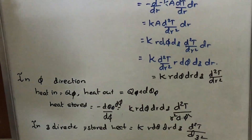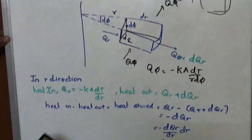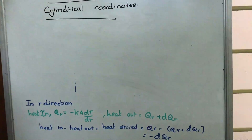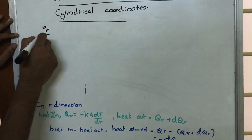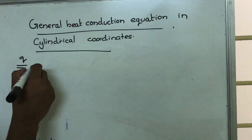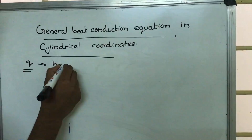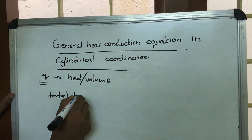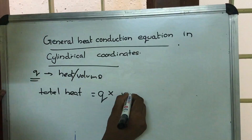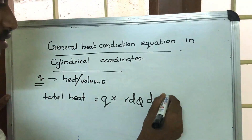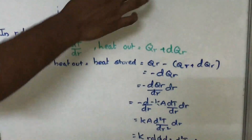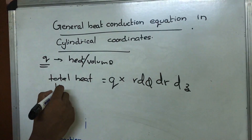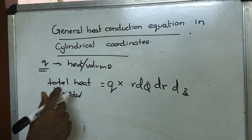These are the energy stored terms due to heat transfer. Now, if Q is the heat liberated per unit volume, then total heat liberated equals Q times volume. The volume here is r·dφ·dr·dz, so total heat liberated equals Q·r·dφ·dr·dz.